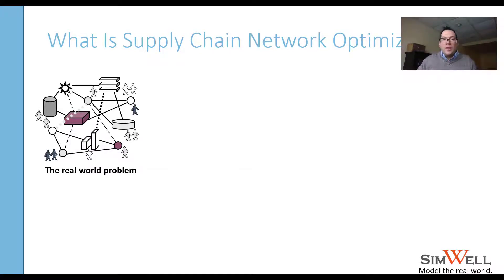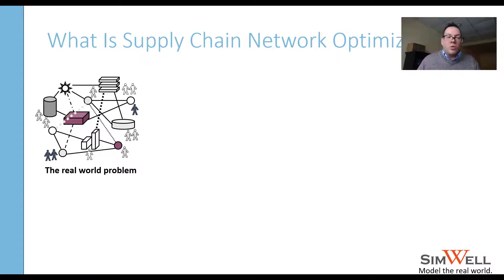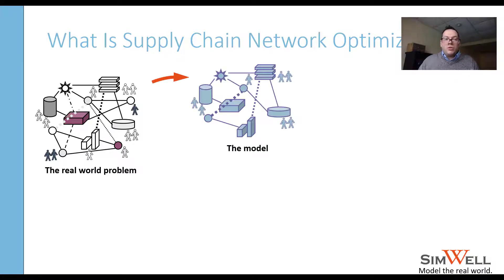What is supply chain network optimization? In a supply chain, you have a real-world problem — it's very complex, there's a lot of variability, a lot of system interaction. It's often too expensive to fix in the real world.